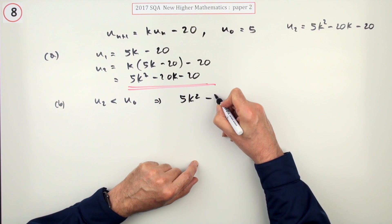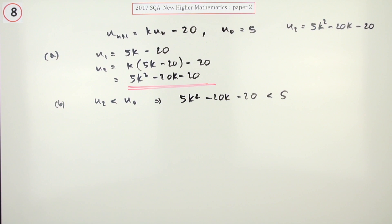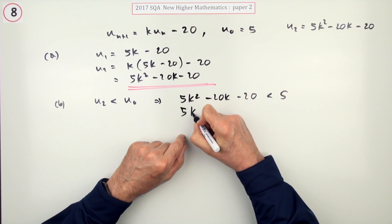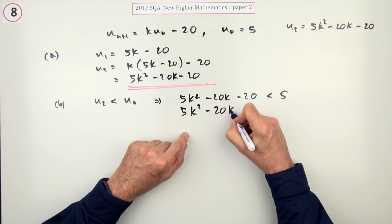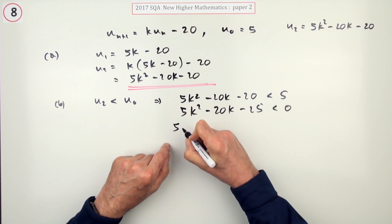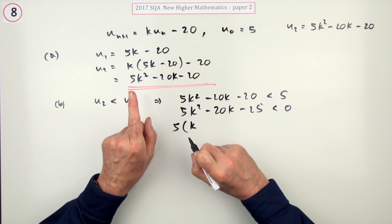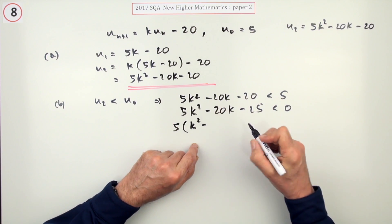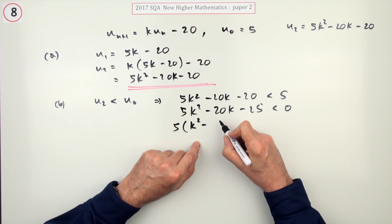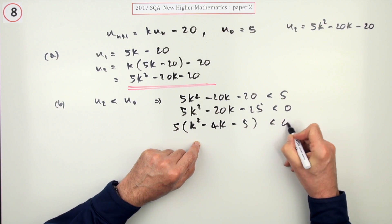So I'll just tidy the top: 5k squared minus 20k minus 25 is less than zero. Now factorize it. I'll take out that 5, which can just disappear, but the SQA seem to like it sitting in there. k squared minus 4k minus 5 is less than zero.